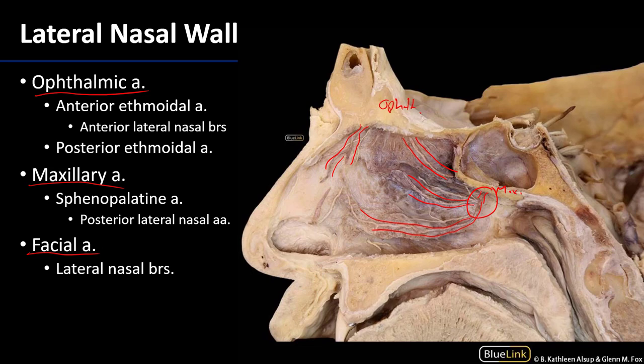While posterior nosebleeds are the minority of cases — only about one in ten — they tend to be more serious because the maxillary artery, as one of the terminal branches of the external carotid artery, has quite a bit of pressure behind it. This is also a difficult area to reach and apply pressure to, so if necessary, a balloon-tipped catheter can be inserted to apply pressure where the sphenopalatine artery and posterior lateral nasal arteries originate.